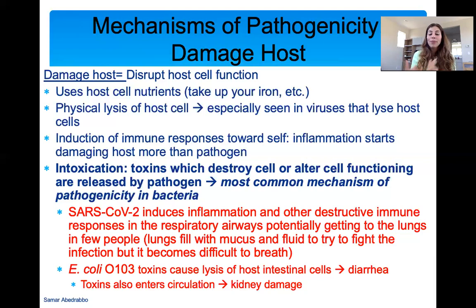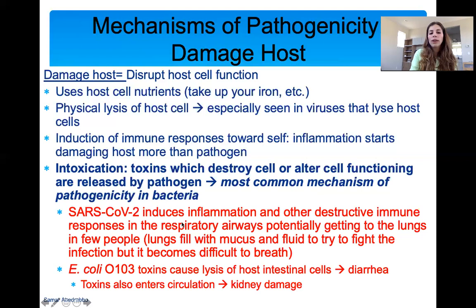For most people — 80% — the immune system has fought it off and they've recovered. But for people where the virus has colonized the lungs, the body will start massive inflammation there. This is the concern: so much inflammation can make it hard to breathe and can lead to death. For E. coli O157, it produces toxins that lyse intestinal cells and cause diarrhea, and can also lead to kidney damage when in the blood.